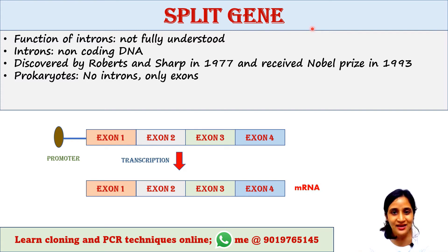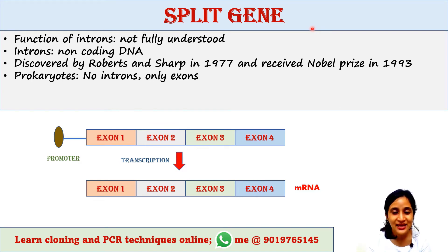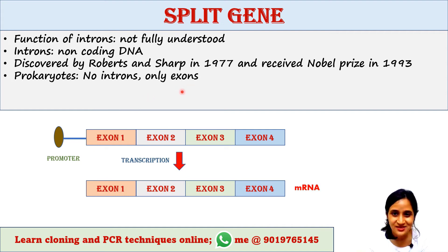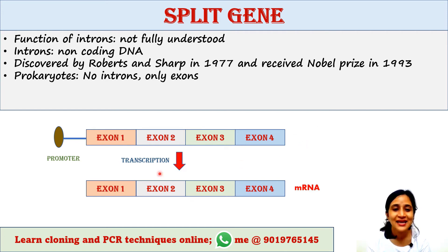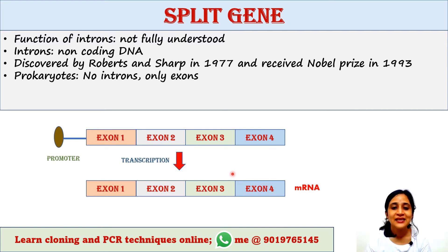Unlike eukaryotes, prokaryotes have a less complex genome. Prokaryotic DNA contains no introns and has longer continuous stretches of exons, or uninterrupted regions. This gene does not contain any introns — it contains only a stretch of exons.